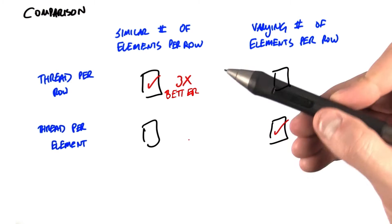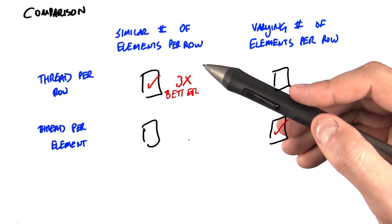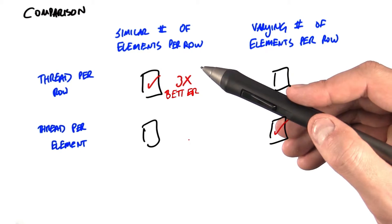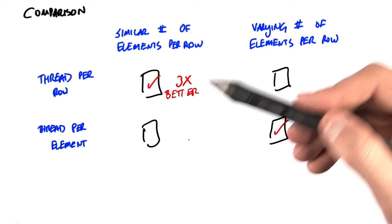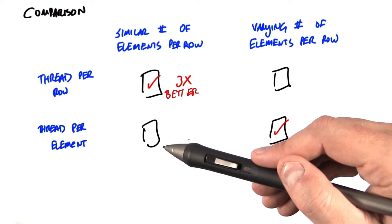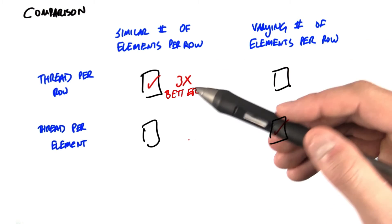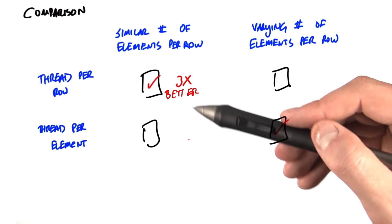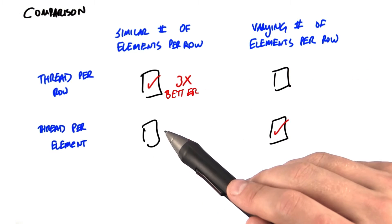How come? Well, in thread per row, all of the partial products are accumulated within a single thread. So they're going to communicate through registers, and there's no communication between threads at all. And thread per element, on the other hand, the segmented scan operation requires communicating between threads to sum up the partial products. That communication is more expensive.